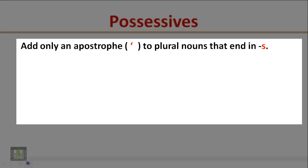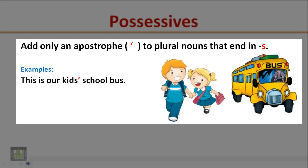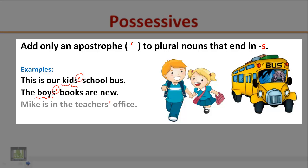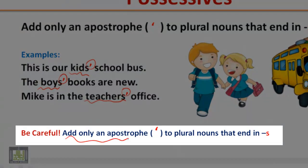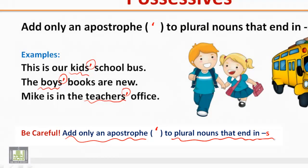Add only an apostrophe to plural nouns that end in S. Examples: This is our kids' school bus — kids is a plural noun, so we add only an apostrophe. The boys' books are new — boys is a plural noun, so we add only an apostrophe. Mike is in the teachers' office — teachers is a plural noun, so we add only an apostrophe.